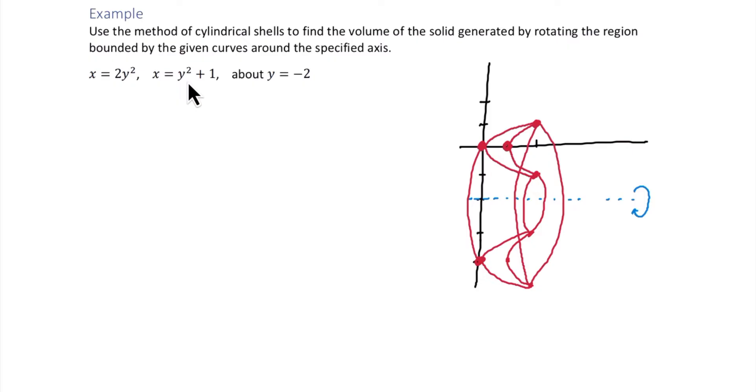The volume of this solid using cylindrical shells will integrate from negative 1 to 1 looking at those y values. And the circumference 2 pi r. The radius in this case is not simply y, like we use when we're rotating around the x-axis. Since we're rotating around the line y equals negative 2, we need to use y plus 2.